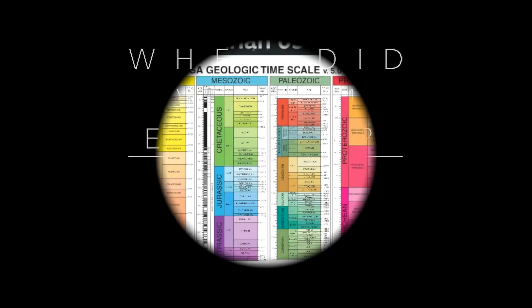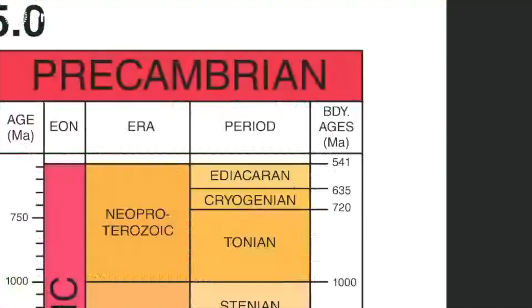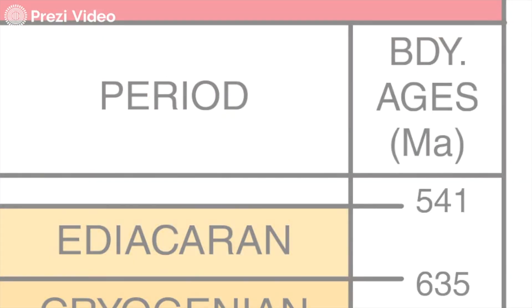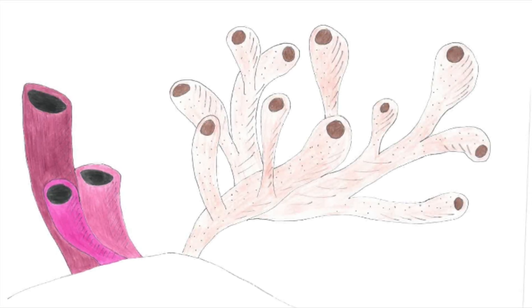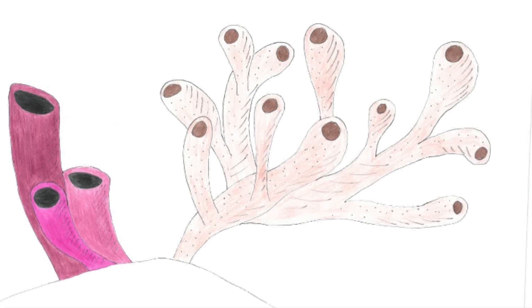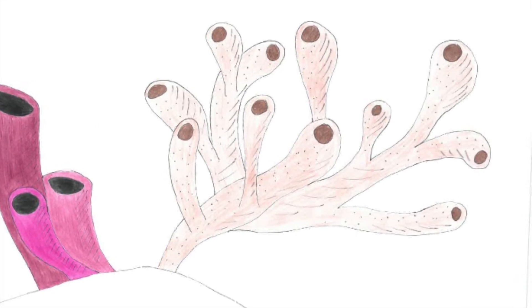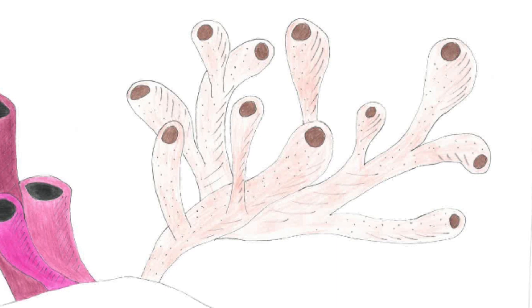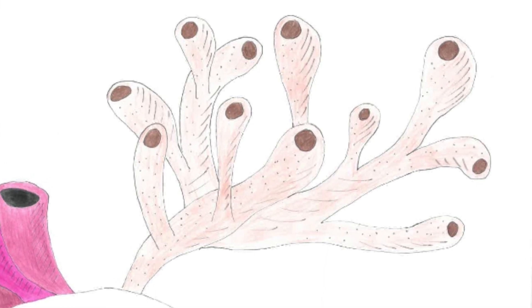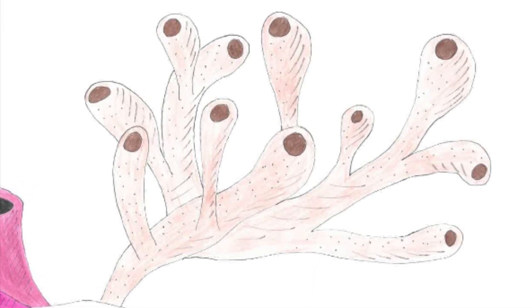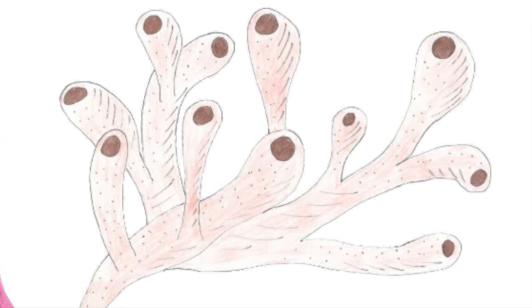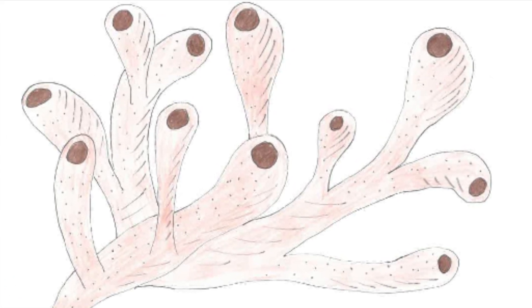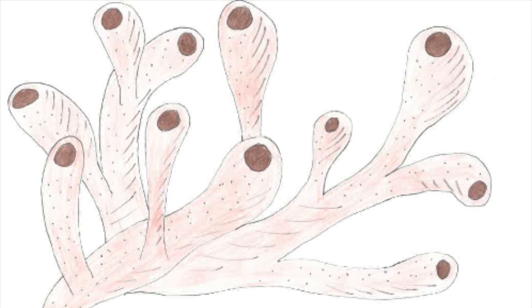The earliest recorded use of venom that we have evidence for is during the Ediacaran period, 635 million years ago. Very recent science points towards the earliest use of venom being predatory sponges. In order for these extremely simple organisms to be successful predators, it is theorised that they would have had to make use of special venom cells or some other chemical means to aid with digestion. These specialised cells are thought to be early precursors to cnidae, which eventually came to be used by cnidarians.